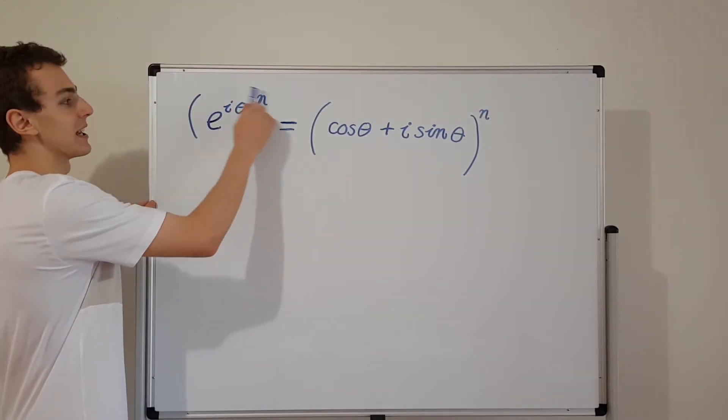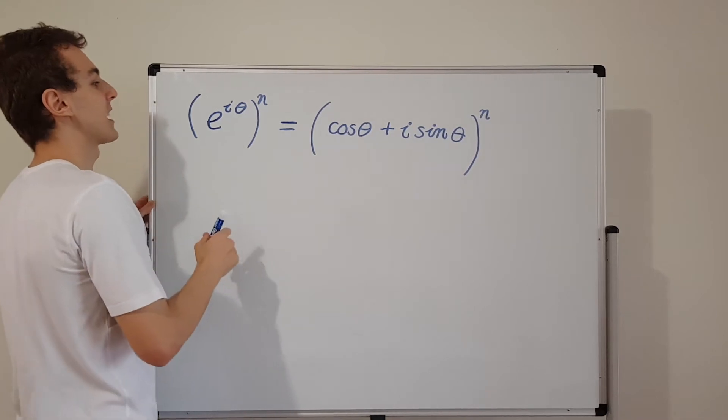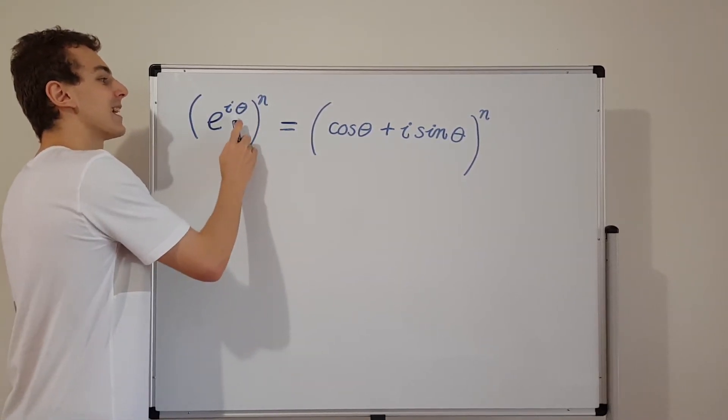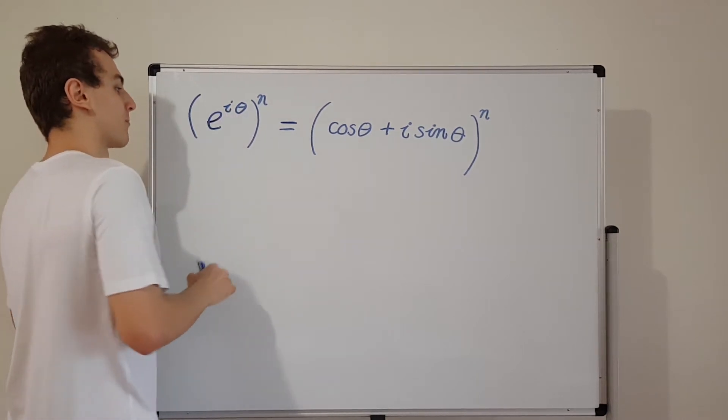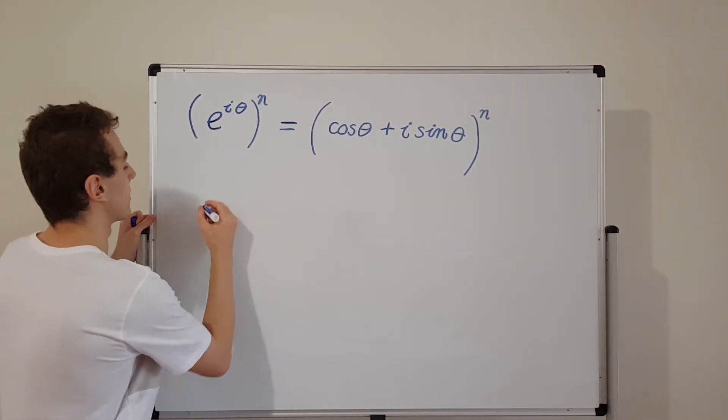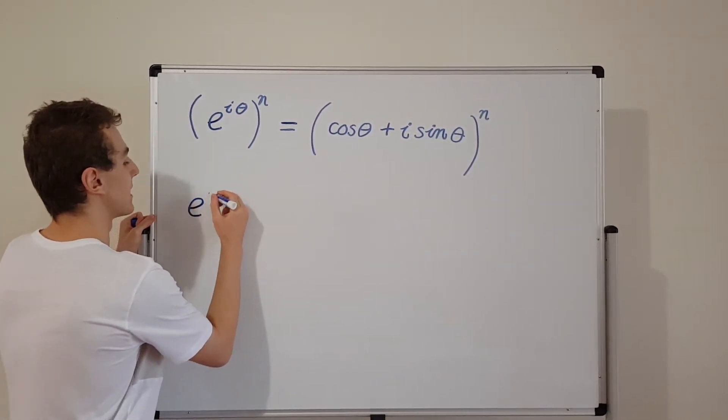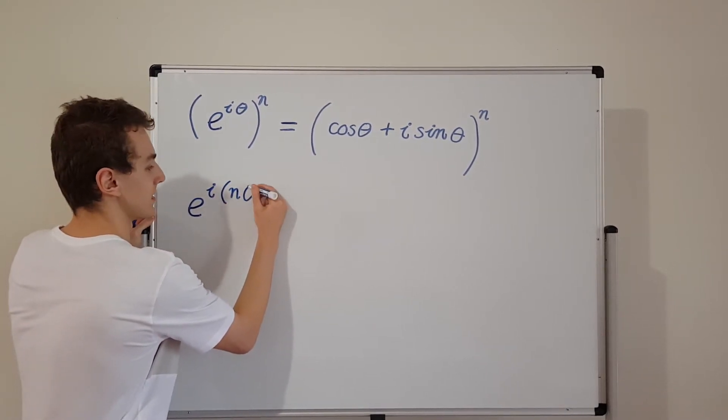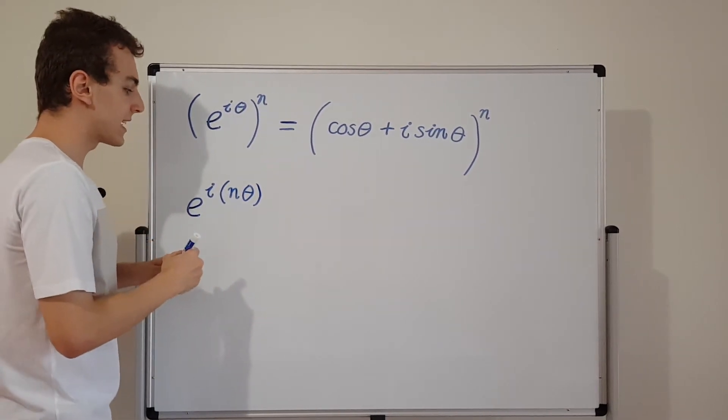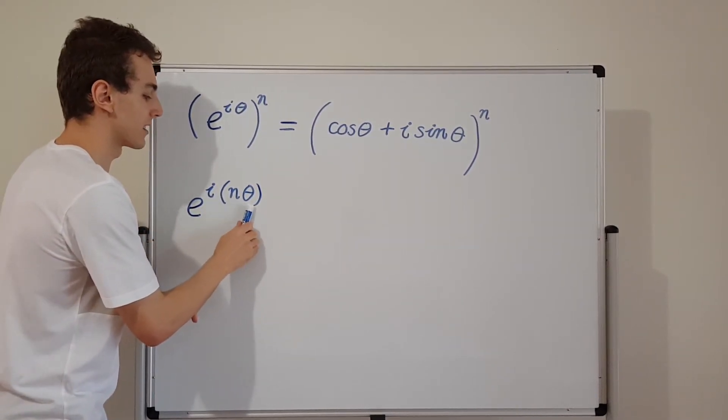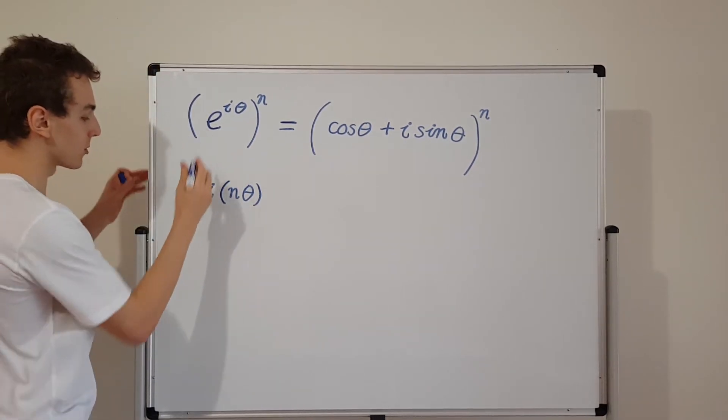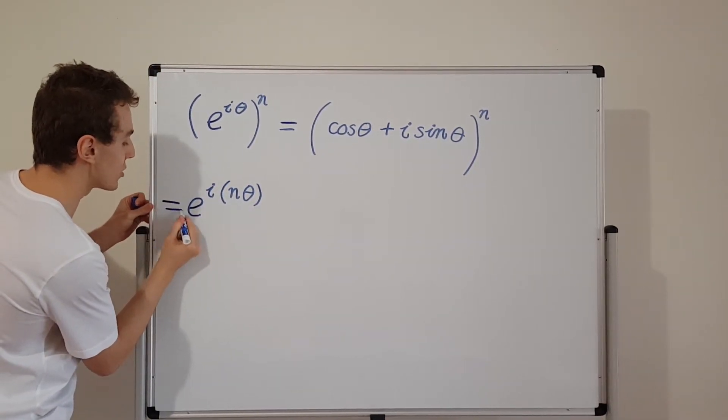So let's use exponential laws to change this left hand side. We can actually use exponential laws to bring this n inside and put it into the exponent. So we're going to have e to the i times n theta. I'm going to specifically group these together, n times theta, because now we have a new angle. So this is actually equal to the top by exponential laws.